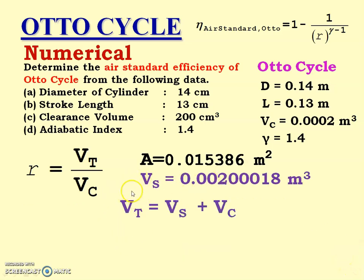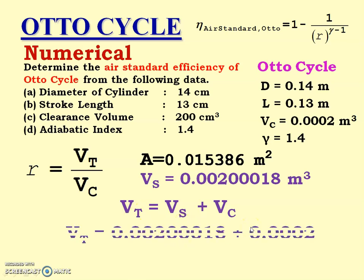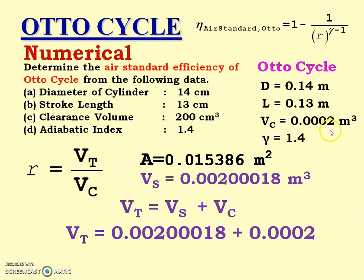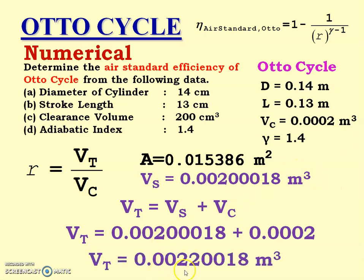Now we calculate Vt: Vt = Vs + Vc. Vs = 0.0020018 m³ and Vc = 0.0002 m³, so the answer is Vt = 0.0022018 m³. We have now calculated Vt.